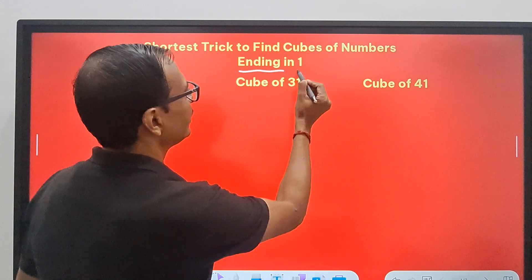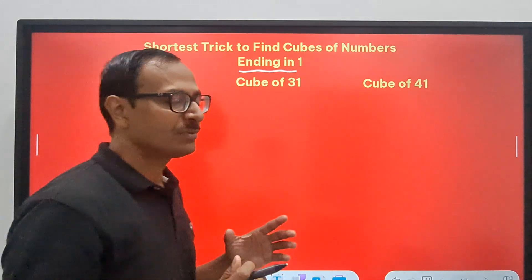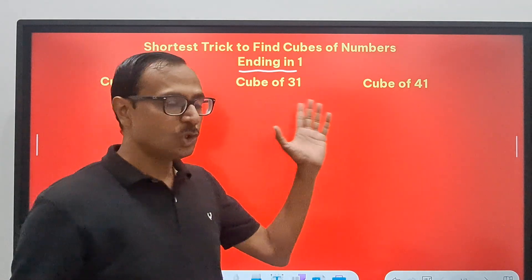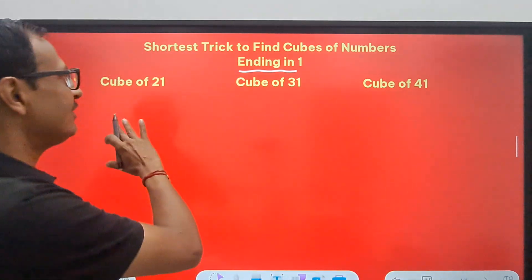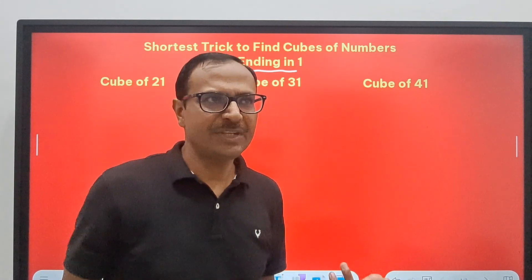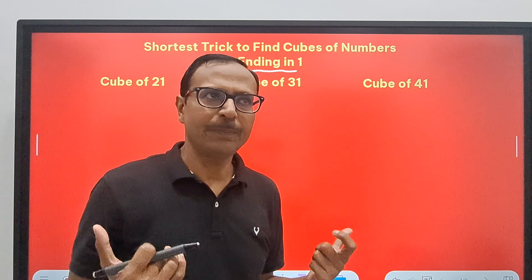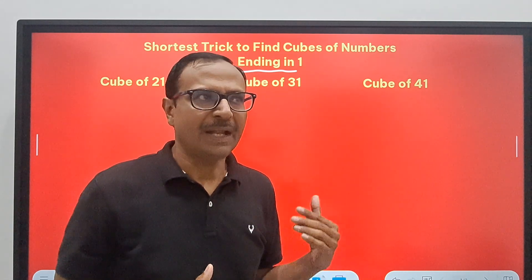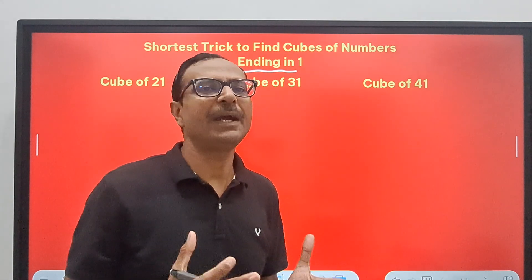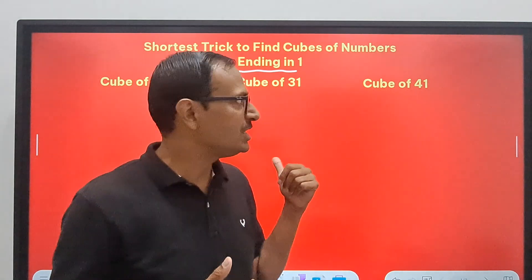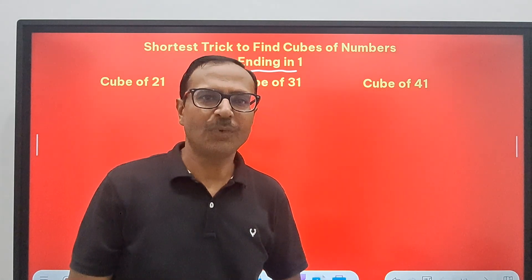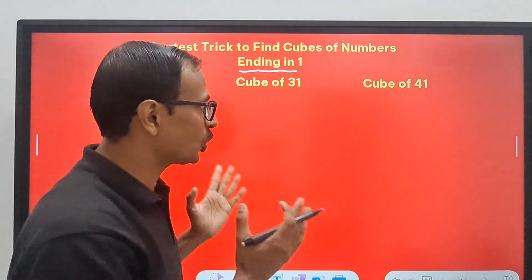For this video I am going to take up numbers which end in 1, and I am going to try and tell you a method through which you can cube numbers like 21, 31, 41 within maybe 10 seconds with practice. But initially it might take like 30 to 40 seconds for each question. So let's see what we have in this particular shortcut trick.